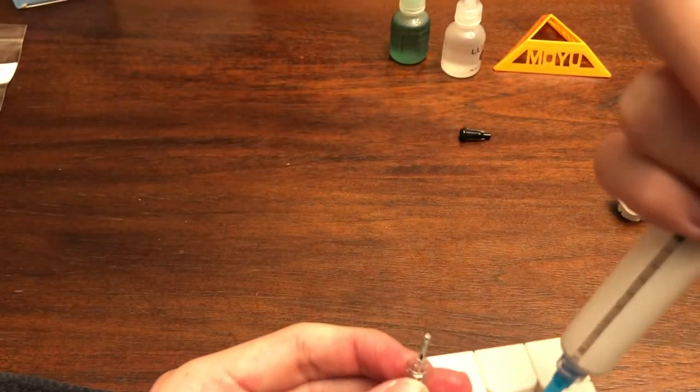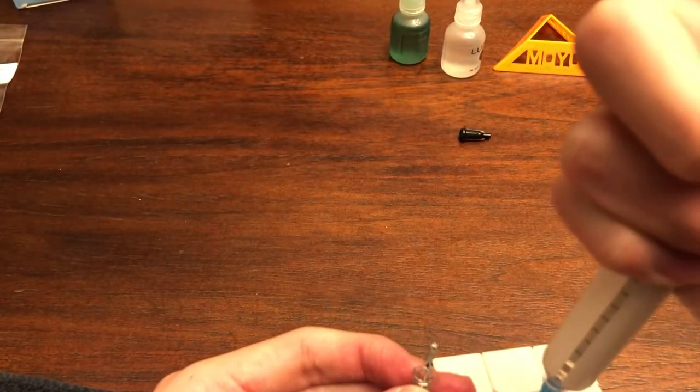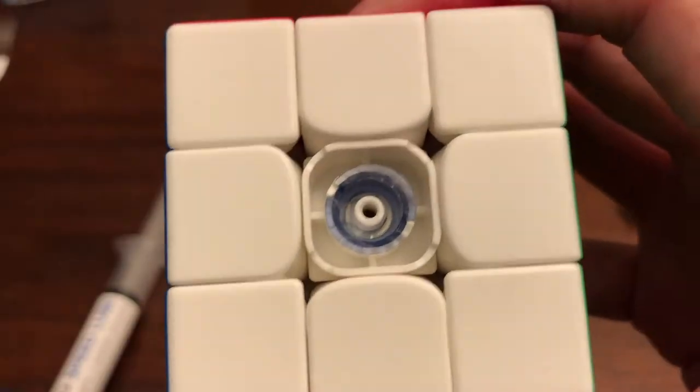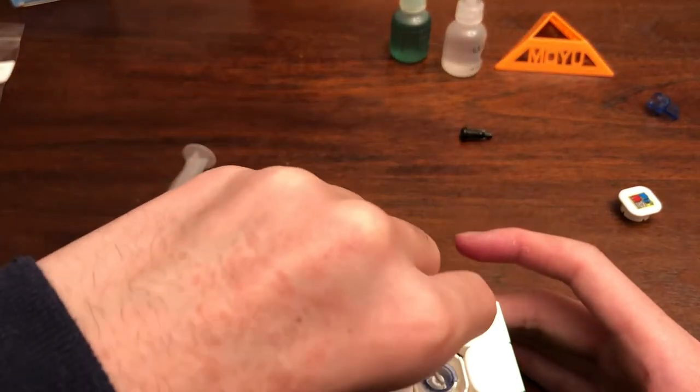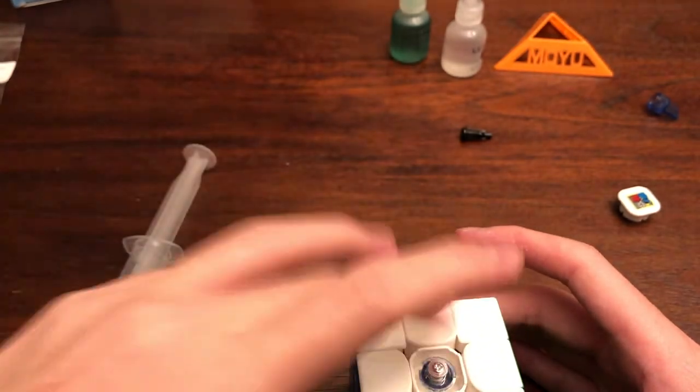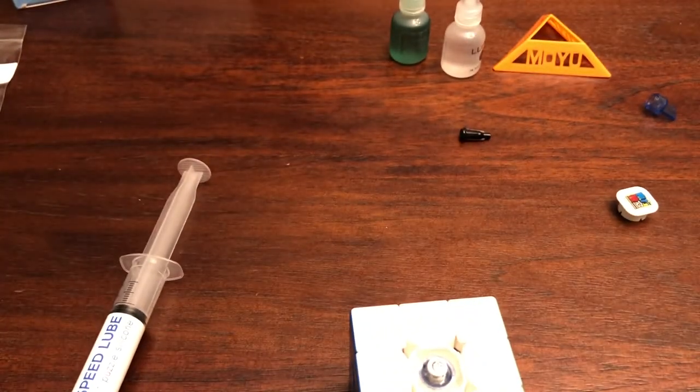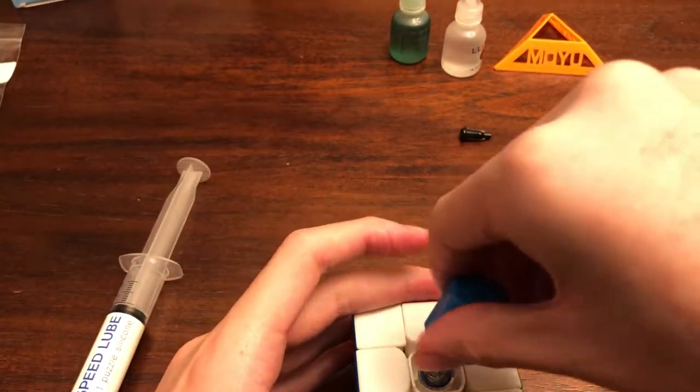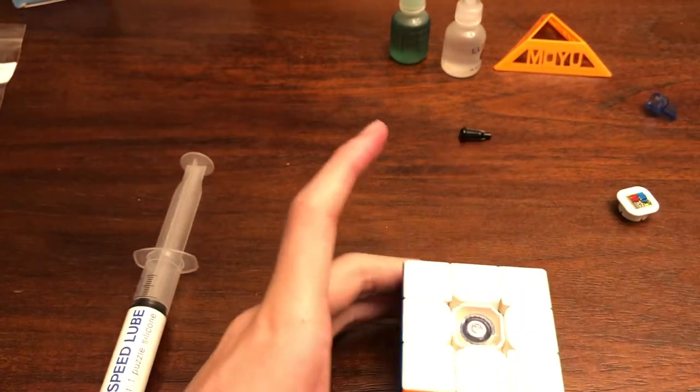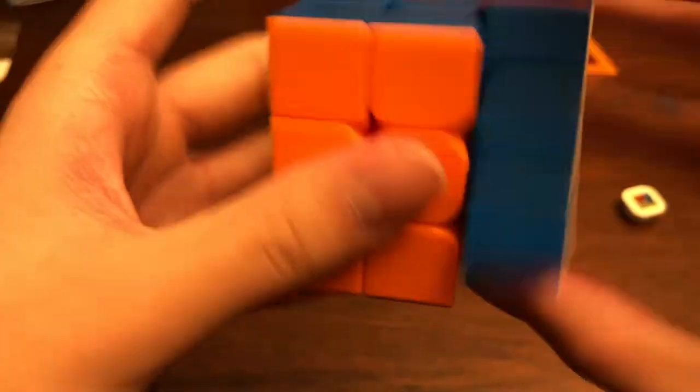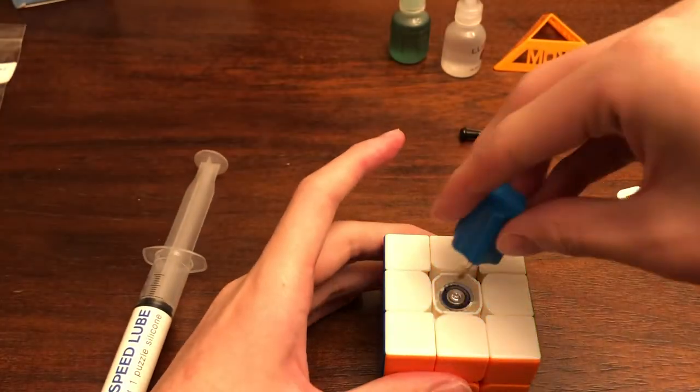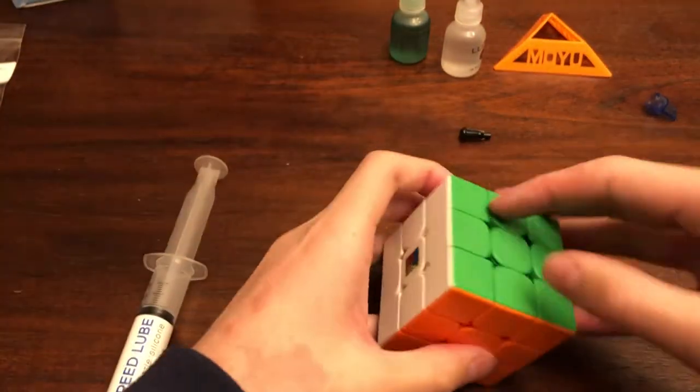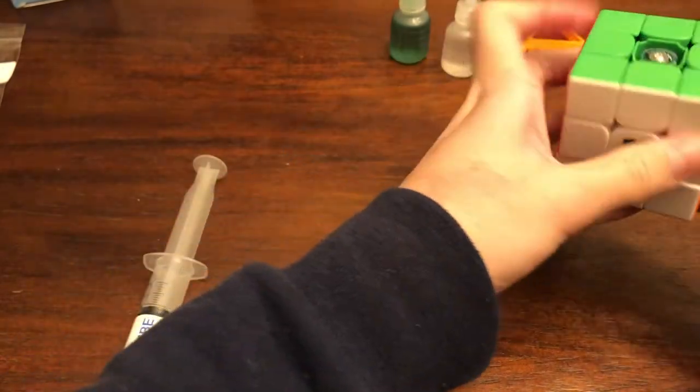And finally just put a tiny tiny bit where the washer is on the puzzle. I don't know if you can see a little bit towards the bottom left. Just gonna put a tiny bit and then you're just gonna stick the screw back in the puzzle and screw it back in. But yeah as you can see, the spring noise is gone.